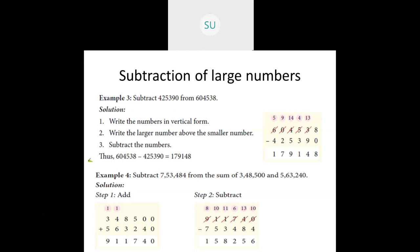Adding the two numbers first — arrange them in vertical form, then add the ones. 0 plus 0 is 0. Then 0 plus 4 is 4. In the 100s place, 5 plus 2 is 7. In the 1000s place, 8 plus 3 is 11 — write 1, carry over 1. Then 1 plus 4 is 5, and 5 plus 6 is 11 — write 1, carry over 1 to the lakhs place. So 1 plus 3 is 4, and 4 plus 5 is 9. The sum is 9,11,740.